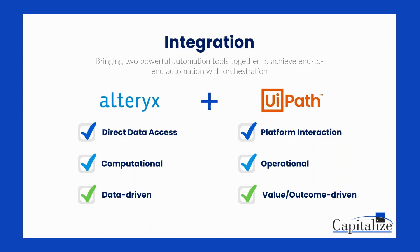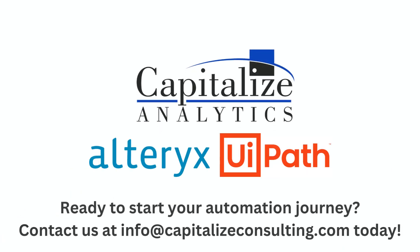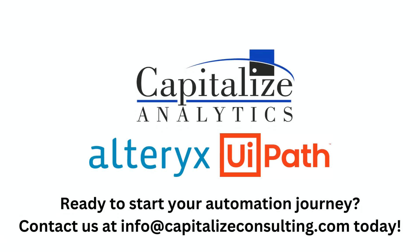By using UiPath and Alteryx together, utility companies can automate their data processing and analysis workflows, really improving upon efficiency and accuracy, while also gaining valuable insights to optimize operations and prevent future outages. Like a skilled team of linemen and engineers, UiPath and Alteryx work together seamlessly to ensure smooth operation. Thank you.